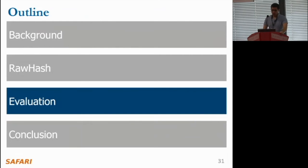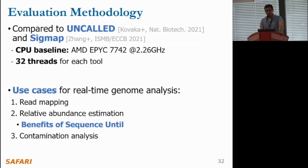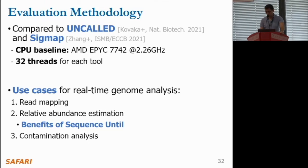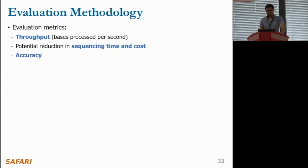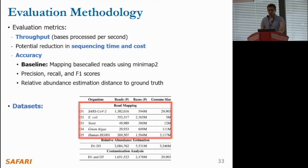We now move to our evaluation. We compare RawHash with two state-of-the-art works, UNCALLED and Sigmap, across three use cases for real-time genome analysis: read mapping, which maps reads to a reference genome; relative amounts estimation, which identifies the ratio of each genome in a sample; and contamination analysis, which identifies if a sample is contaminated with a particular genome. Our evaluation metrics include throughput in bases per second, potential reduction in sequencing time and cost, and accuracy. For accuracy, we map base-called reads of corresponding raw signals using Minimap2 and calculate precision, recall, and F1 scores.